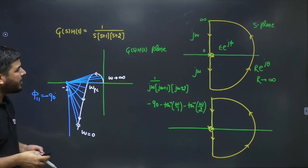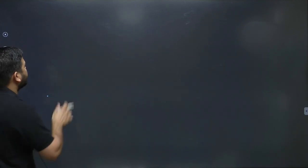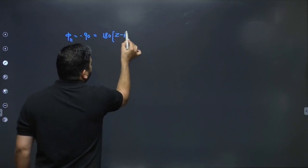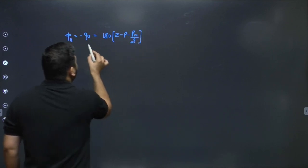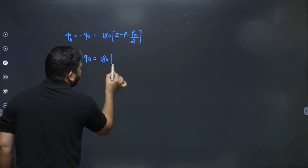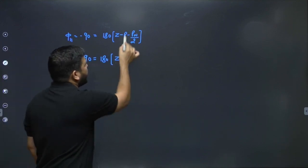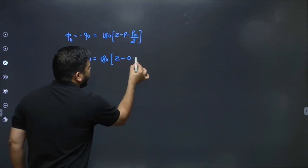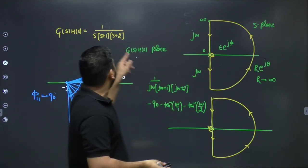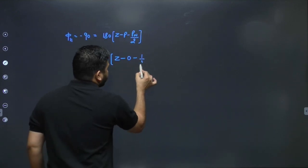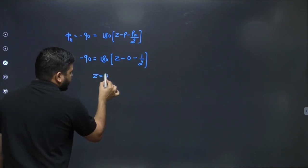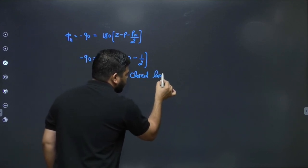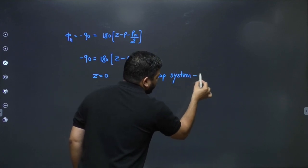Applying the formula: −90 = 180 × (Z − P − PW/2). P = 0 (no poles of G(s)H(s) in the right half of the s-plane). PW = 1 (one pole on the imaginary axis, at the origin). Solving: −90 = 180 × (Z − 0 − 1/2), giving Z = 0.